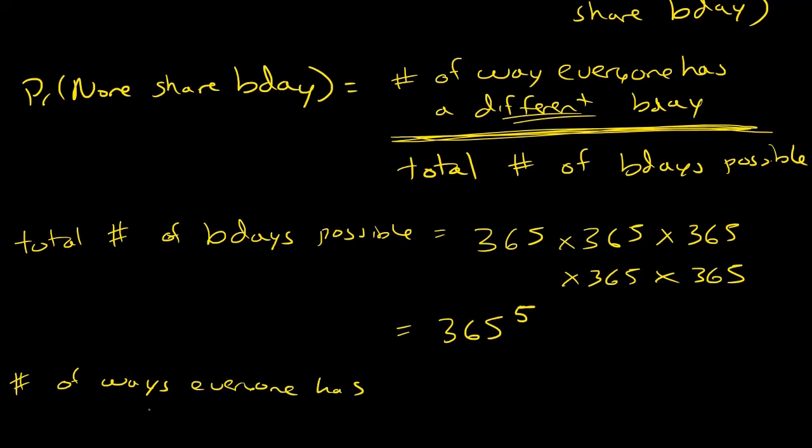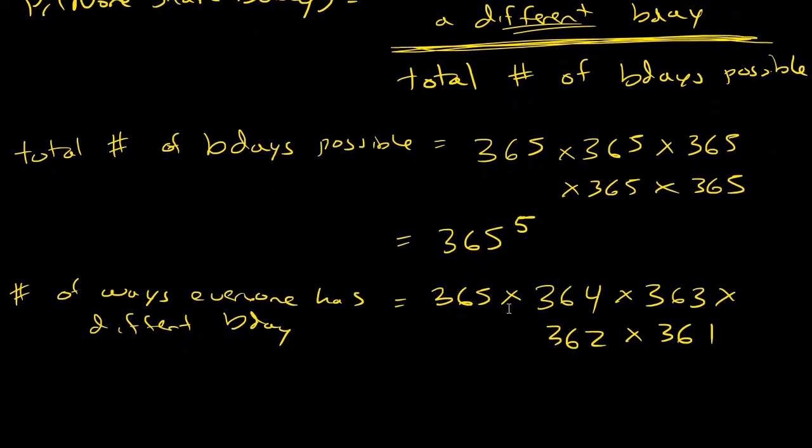Now what about the numerator—the number of ways everyone has different birthdays? The first person can have a birthday on any day of the year. If the second person does not share the same birthday as the first person, they only have 364 options. If the third person doesn't share with the first two, they only have 363 options, 362 options for the fourth person, and 361 options for the fifth person. If you notice, this is a permutation because I'm basically sampling from a calendar without replacement. I have a calendar which has 365 days and I'm pulling out five days, so this equals P(365,5), which equals 365 factorial divided by (365-5) factorial, or 365 factorial divided by 360 factorial.